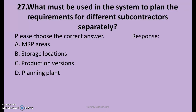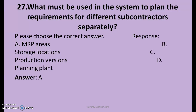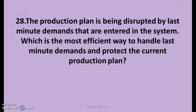27th question. What must be used in the system to plan the requirements for different subcontracts separately? The options are: A. MRP areas, B. Storage locations, C. Production versions, D. Planning. The right answer is A. MRP areas.